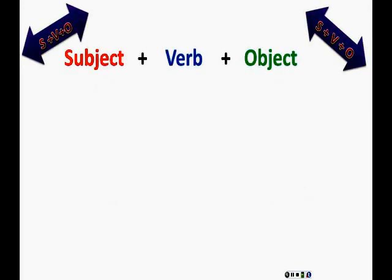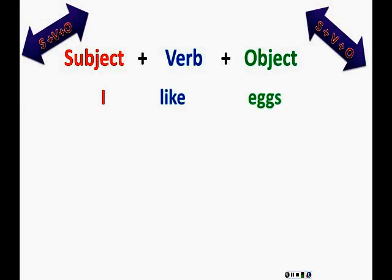In the next pattern, there is a subject plus a verb plus an object. I like eggs. In this sentence, we have a subject, I. A verb, like, and the object is eggs.